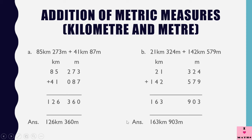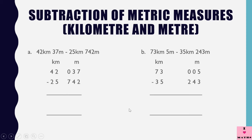This is how we add kilometers and meters. Now let us do the subtraction of metric measures — kilometers and meters. If you have to subtract 25 kilometers 742 meters from 42 kilometers 37 meters, we write 42 in the kilometers column and 037 in the meters column, because in the meters column we need three columns.